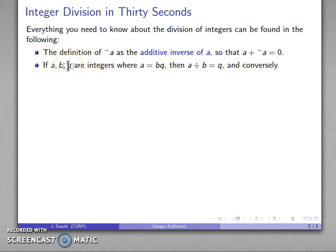If A, B, and Q are integers, where A is B times Q, then A divided by B is Q. And conversely, if I know this, then I also know this.